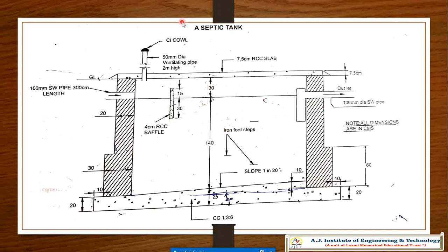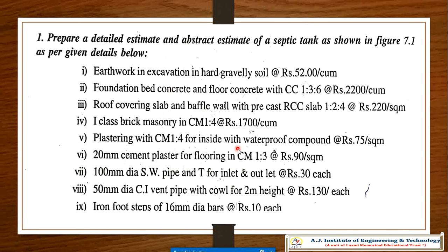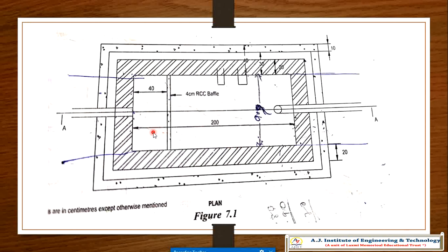Remember, this is a septic tank where your sewage and latrine waste will come in, then pass to a soak pit and through the ground by proper filtration. The sludge will be collected here and disposed of. Now, the plastering area — you can confirm the plastering area is 200 by 90.